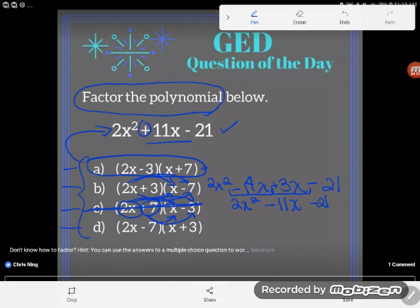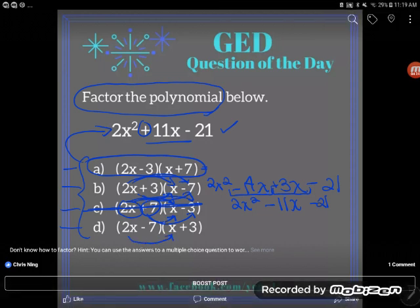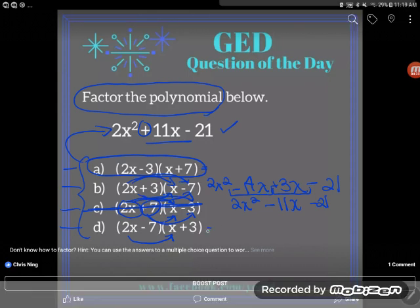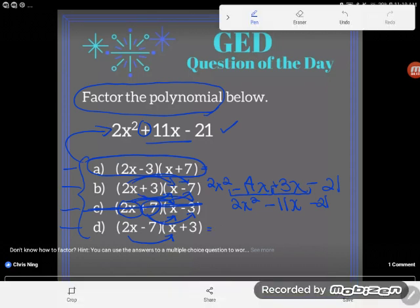And so really important that you are good with negatives as you do these problems here. Okay that's another prerequisite skill. Being able to add and subtract positive and negative numbers and being able to multiply and divide them. So couldn't be b?